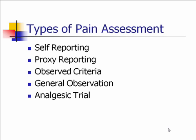There are really five categories of measuring pain: self-reporting, proxy reporting, observed criteria, general observation, and analgesic trial. I'll tell you briefly what each means now, and then we'll go into more detail.